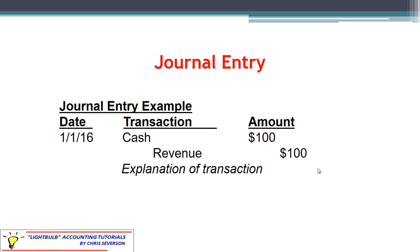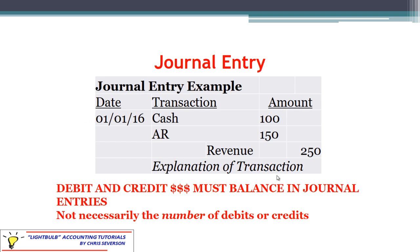Here is another example of a journal entry: we're debiting cash for 100 and crediting revenue for 100. Notice the indentation. Oftentimes you'll see an explanation underneath, but that's not always needed — as you get used to reading journal entries, you'll be able to understand what's going on without seeing the transaction explanation. You can have two debits and one credit as long as the total debit dollar amounts balance the total credit dollar amounts.